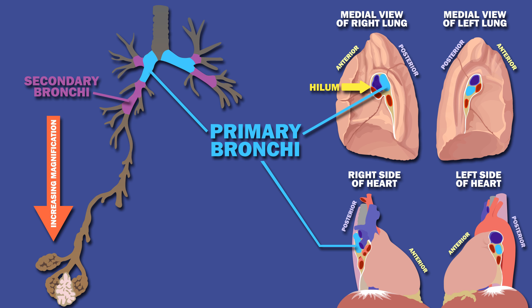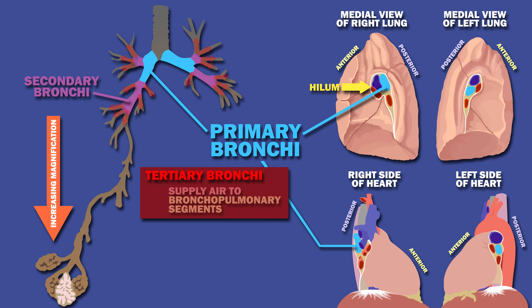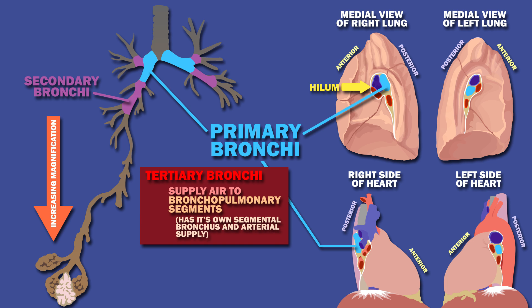The secondary bronchi then branch into segmental or tertiary bronchi, which supply air to bronchopulmonary segments, which are subdivisions of the lobes. A bronchopulmonary segment has its own segmental bronchus and arterial supply.